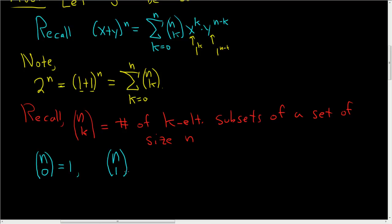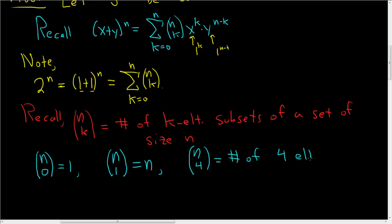If you have n elements, there are n subsets containing 1 element, so n choose 1 equals n. And n choose 4 would be the number of 4-element subsets, and so on.